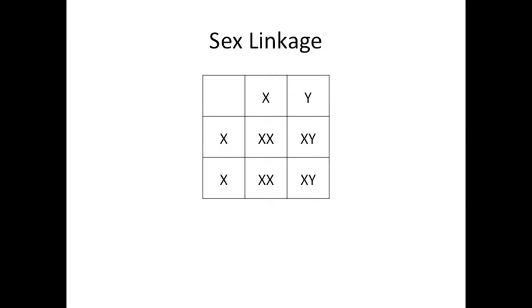Okay, so sex linkage. This is how the Punnett square looks. Males can give an X or a Y, and females always give an X. What this means is that you have an equal chance of having a girl or a boy. It's 50-50 for both.